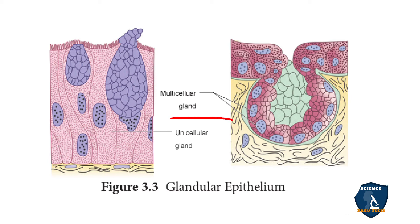In a multicellular gland, you can see many nuclei within the cells, which is why it is called multicellular. You can see many cells grouped together here. In unicellular glands, there is only one cell — that is the unicellular gland.